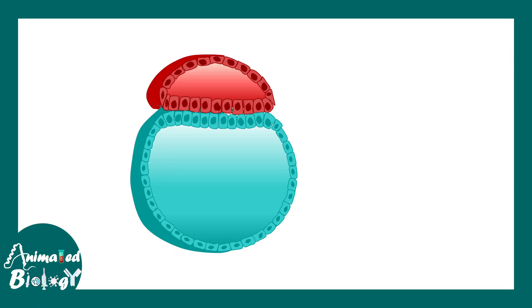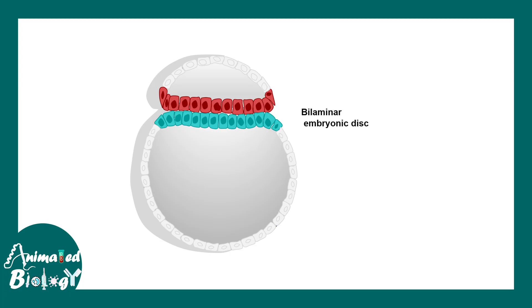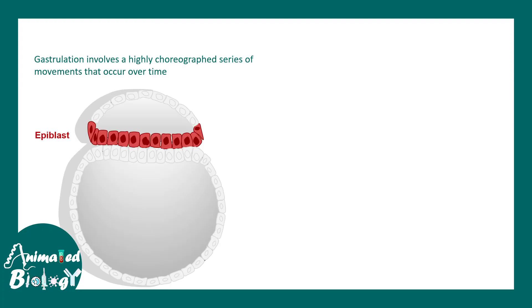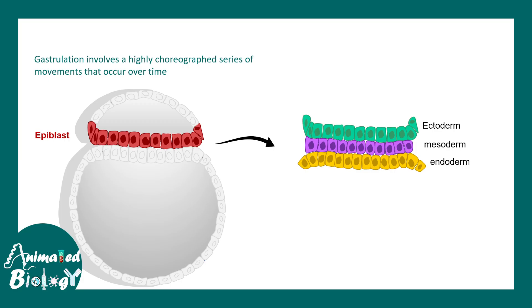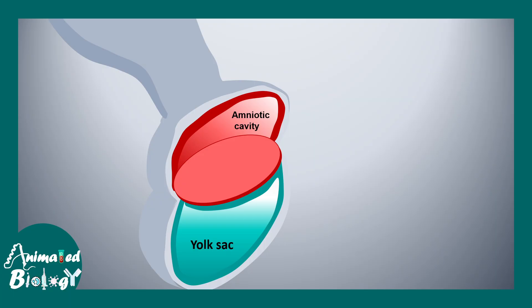Now let's look at the embryo in 3D. Here in red, you can see the epiblast, which would eventually give rise to the embryo, and here is the hypoblast, which would give rise to the yolk sac. The amniotic cavity is between the epiblast cells, and the yolk sac is between the hypoblast cells. During the process of gastrulation, the bilaminar embryonic disc — composed of epiblast and hypoblast — ultimately gives rise to ectoderm, mesoderm and endoderm.